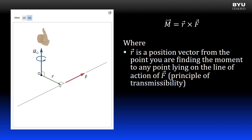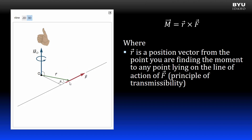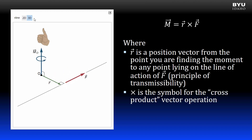Pay attention to this. The start point and end point of the position vector matter. The start point is the point where we are computing the moment. The end point can be anywhere on the line of action of the force vector. It does not have to be the perpendicular distance we call D. The cross in this equation is the symbol for the cross product vector operation, which we will discuss in a moment.